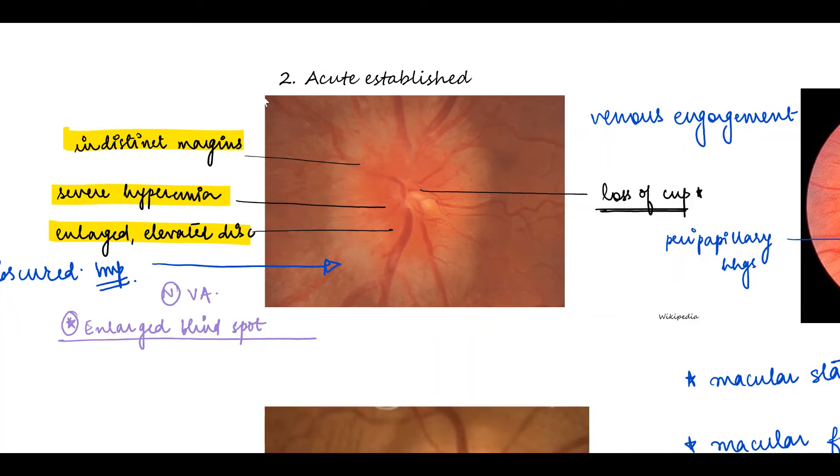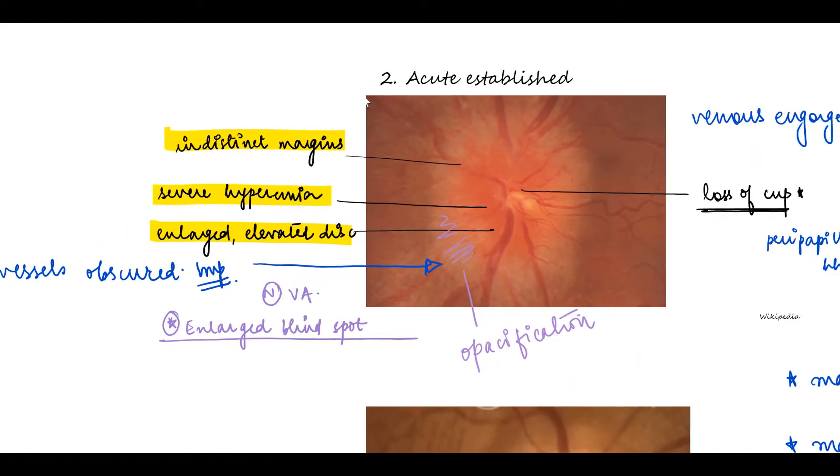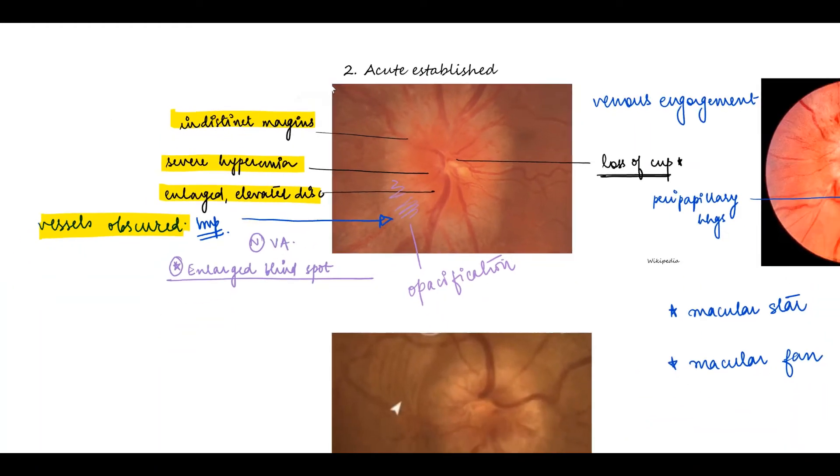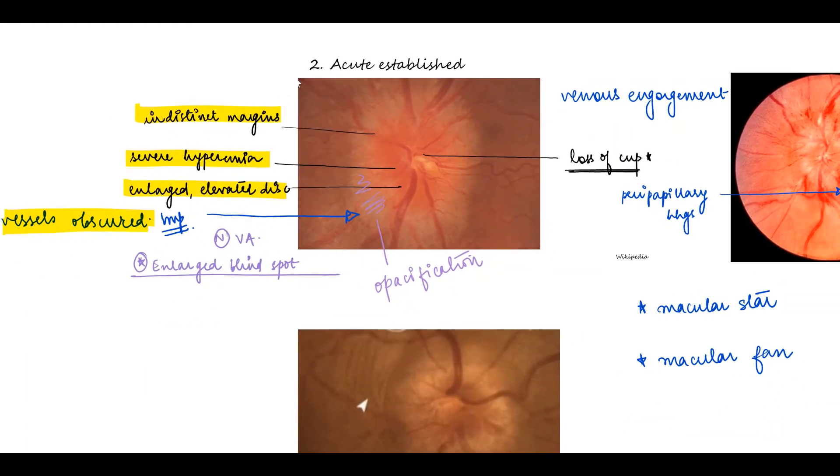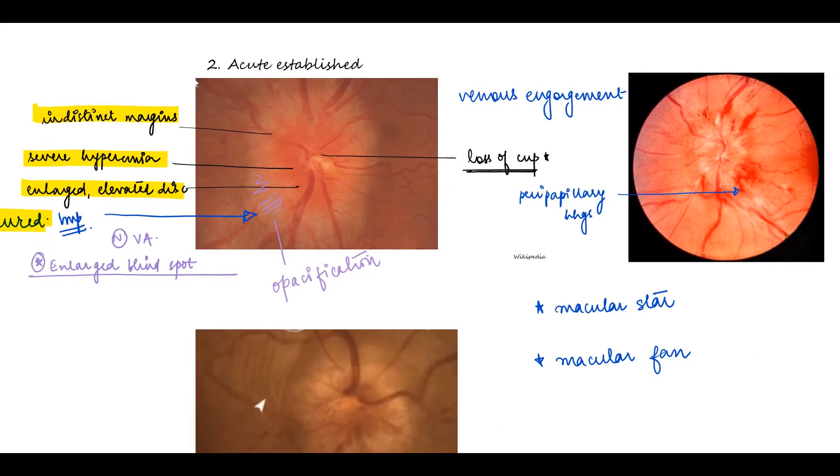Once this edema goes in the peripapillary areas, it causes a grayish opacification and this leads to an obscuration of the vessels leaving the disc and eventually even the vessels on the disc are obscured, and this is very characteristic in distinguishing it from pseudopapilledema. If we can see an obscuration of the vessels, it is a true papilledema which is because of intracranial tension.